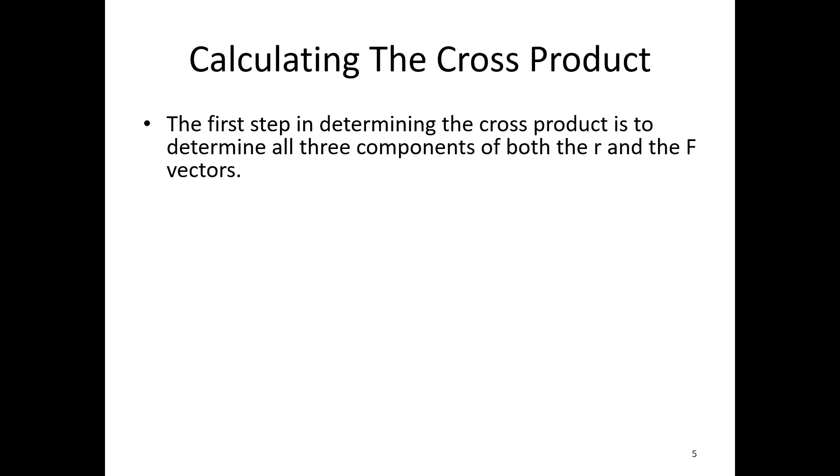Calculating the cross product: First step is to determine all three components of both the r and the f vectors. Even for 2D vectors, we need to list x, y, and z components. If it is a 2D vector, your z component is simply going to be zero.